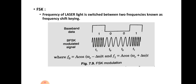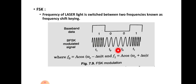Next is frequency shift keying (FSK), where the frequency of the laser light is switched between two frequencies. For binary 1, a higher frequency is transmitted; for binary 0, a lower frequency is transmitted. Two different frequencies are used for transmission. F0 represents the frequency corresponding to baseband signal 0: F0 = A·cos((ωc − Δω)t). F1 is the frequency corresponding to baseband signal 1: F1 = A·cos((ωc + Δω)t). These are the two frequencies corresponding to FSK.